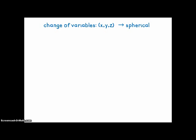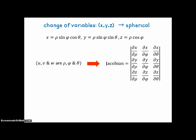So now let's look at change of variables from x, y, z into spherical variables. Here are the equations from a previous chapter for converting x, y, and z into spherical coordinates. And so u, v, and w in this change of variables are rho, phi, and theta. And here's our Jacobian. First row are the partial derivatives of x, second row partial derivatives of y, and the third row partial derivatives of z in the set order rho, phi, and theta.